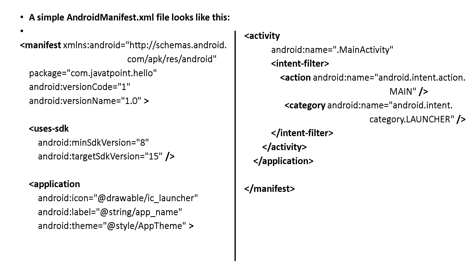Here is an example which includes all these items. You open the manifest tag with package name, version code, and version name. Then uses-SDK specifies the minimum version and the target version. Then the application tag includes icon, label, and theme. Within it, activity, service, content provider, and broadcast receivers are all declared. The activity has an activity name — main activity — and an intent filter with action and category. Then you close the intent filter, activity tag, application tag, and manifest tag.